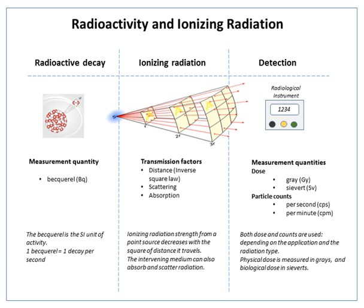1 Becquerel = 1 s⁻¹. A special name was introduced for the reciprocal second to represent radioactivity to avoid potentially dangerous mistakes with prefixes. For example, 1 µs⁻¹ could be taken to mean 10⁶ disintegrations per second, rather than 10⁻⁶ s⁻¹, or 10⁶ s⁻¹.